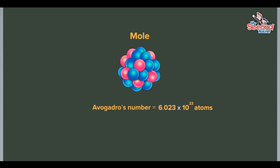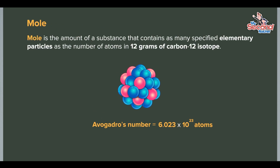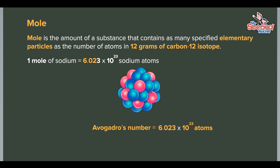Carbon-12 isotope ko 12 grams ma 6.023 times 10 to the power 23 ota atoms hunchan. Yo number lai Avogadro's number wa Avogadro's constant manin chan. Yehi number ko basis ma mol baneko — kunepani substance ko carbon-12 isotope ko 12 grams ma hunne atoms ko number barabar atom, molecule, ion, radical, electron, proton, neutron jastha elementary particles hunne amount ho. In other words, mol is the amount of a substance that contains as many specified elementary particles as the number of atoms in 12 grams of carbon-12 isotope. Jasthai 6.023 times 10 to the power 23 atoms hunne sodium ko amount pani one mol hunsa.